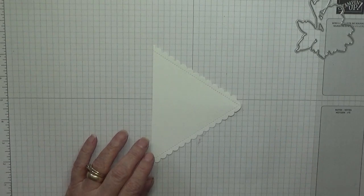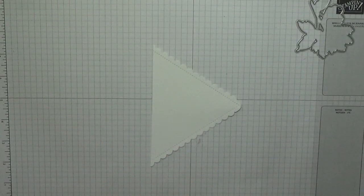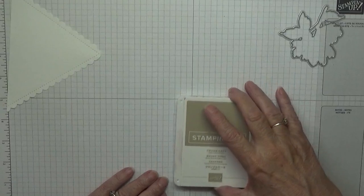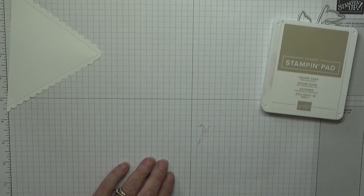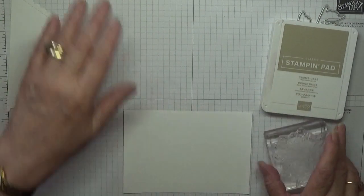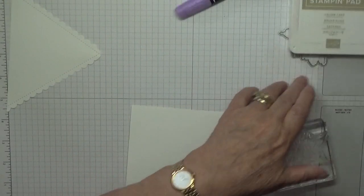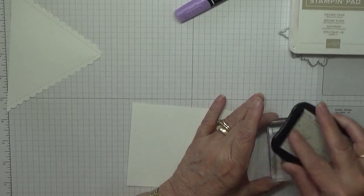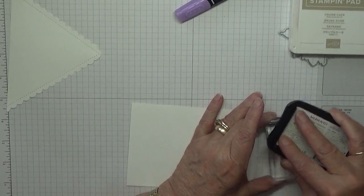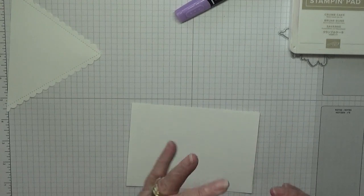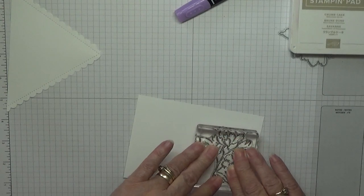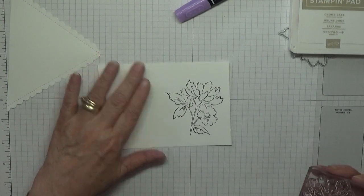To do that we're going to use the crumb cake. Let's stamp our flower first, give it a chance to dry. I've got memento black ink and we're just going to ink this up really nice and stamp it down. There's our image.